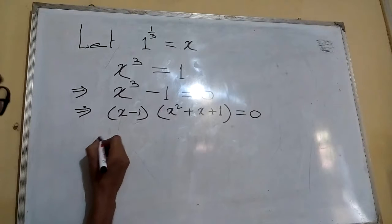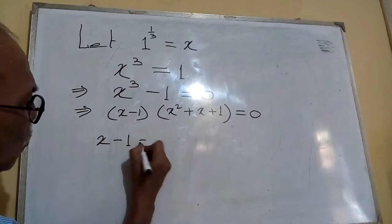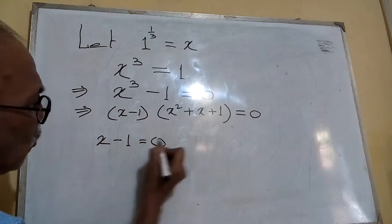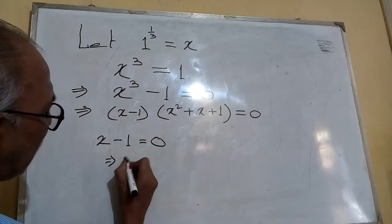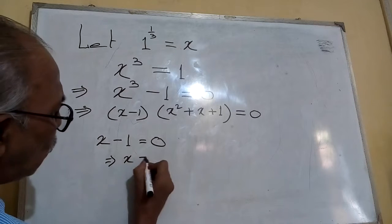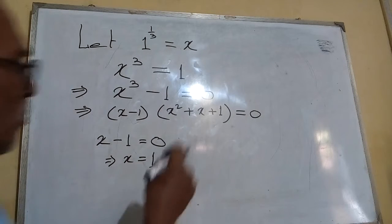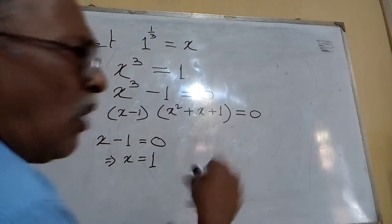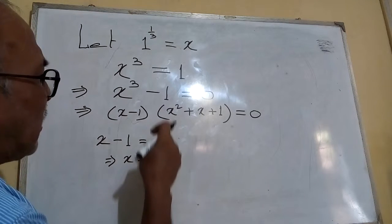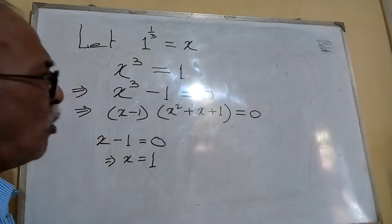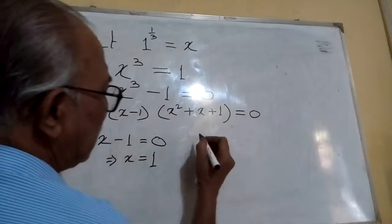From here, we can say x minus one equals to zero. This implies x equals to one. This we are knowing from lower classes. This is called the arithmetical cube root of one.